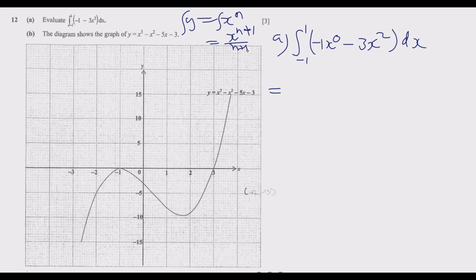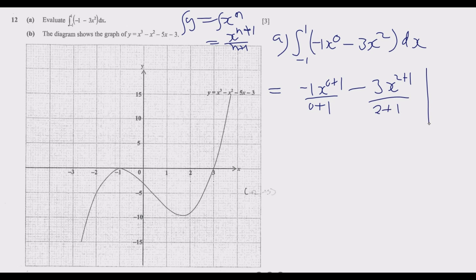So we get negative 1 times x to the power 0 plus 1 over 0 plus 1, then minus 3 times x squared — we add 1 and divide by the new power — over the interval negative 1 to 1. When we simplify, we end up with negative x minus x cubed, over the interval negative 1 to 1.